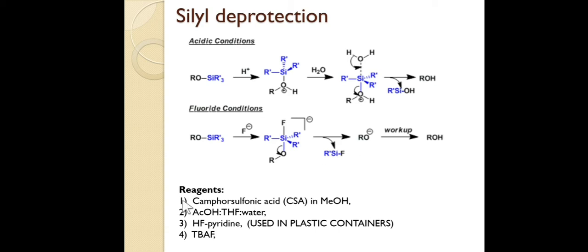For silyl deprotection reagents: in the 1970s–80s, camphorsulfonic acid (CSA) in methanol was used; after that, acetic acid/THF/water was used; and the most commonly used today are HF·pyridine and TBAF (tetrabutylammonium fluoride). HF is also used — since everyone knows HF is used for etching glass, it must be handled in plastic containers.